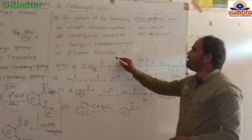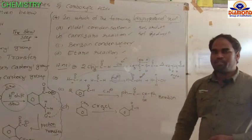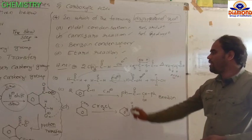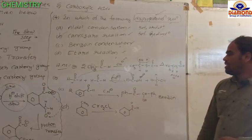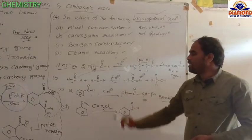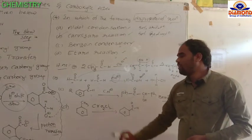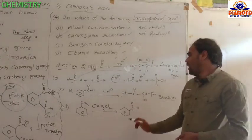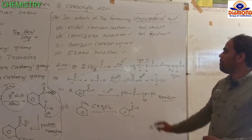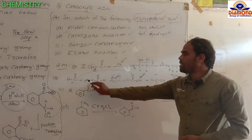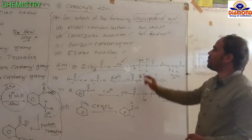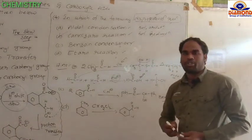Benzoin condensation is nothing but two moles of benzaldehyde in the presence of cyanide reacting with each other to form benzoin as product. Etard reaction is nothing but toluene reacting with chromyl chloride and forming benzaldehyde. But only in the Cannizzaro reaction does 50% oxidation and 50% reduction occur — that is why it is called a disproportionation reaction.